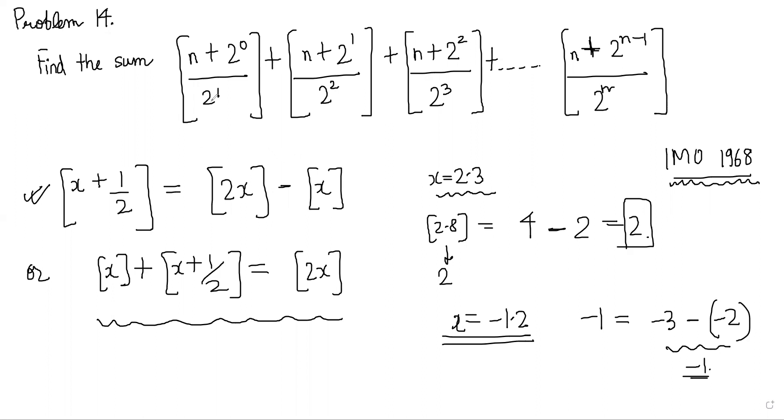Now why did I think of this identity? Obviously you can see that 2 to the 0 by 2 to the 1 is half, and n by 2 plus half, this is n by 2 squared plus half, n by 2 cubed plus half.